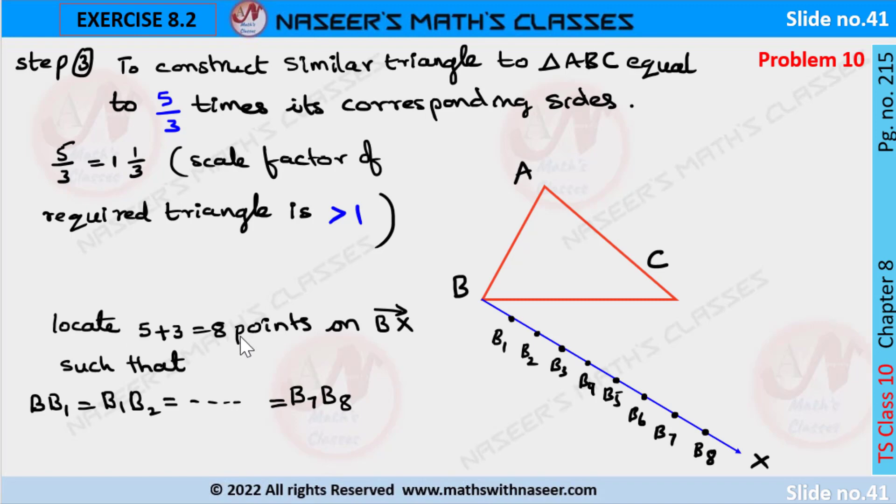Then we have to locate 8 points on ray BX such that B-B1 is equal to B1-B2, and so on up to B7-B8 equal parts starting from point B.